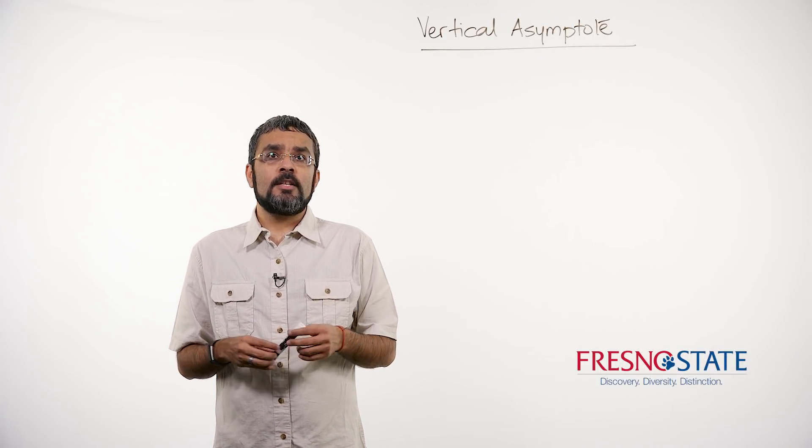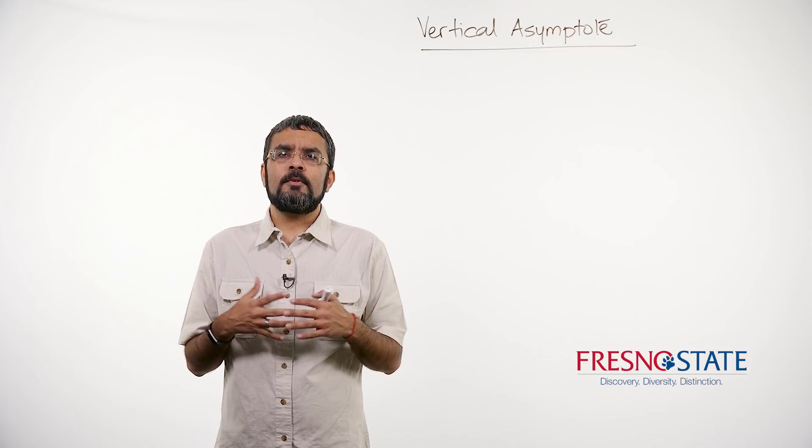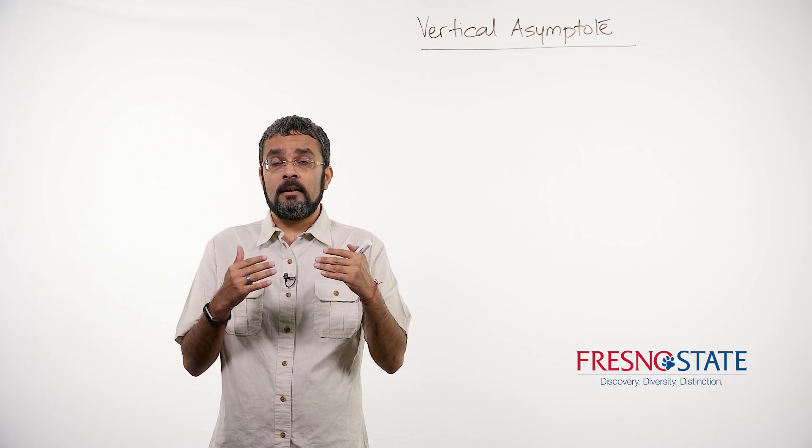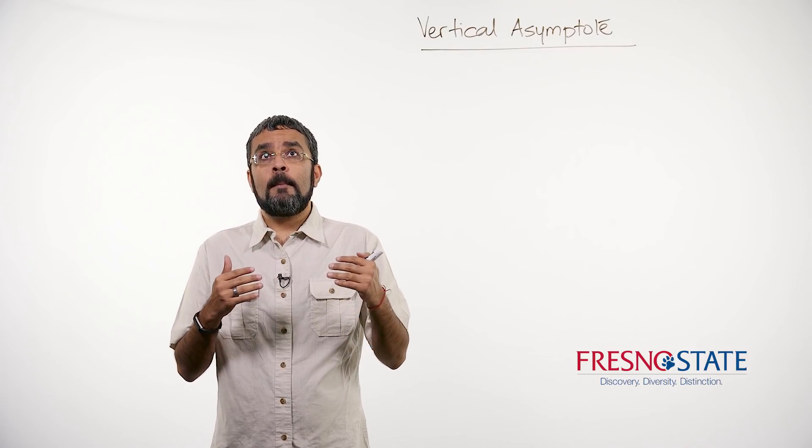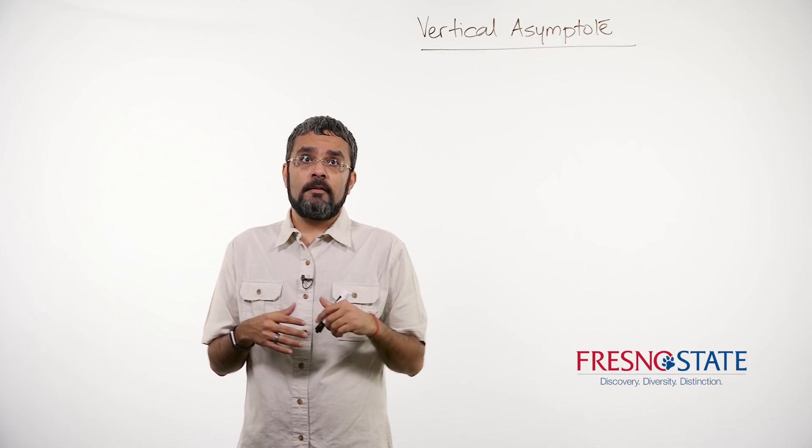In this video, we're going to talk about vertical asymptotes. So what is a vertical asymptote? A vertical asymptote means that as I approach a point from either direction, my function is either going to go towards positive infinity or negative infinity.